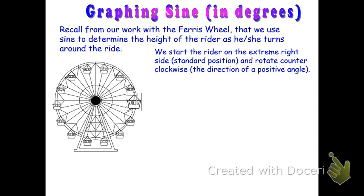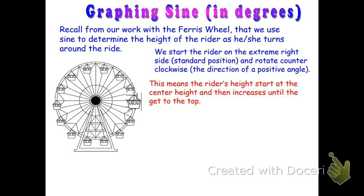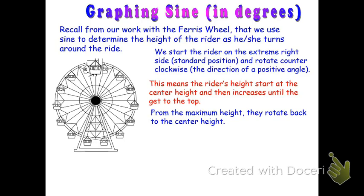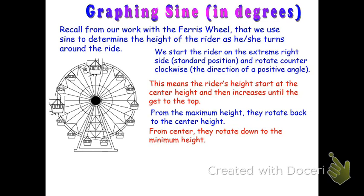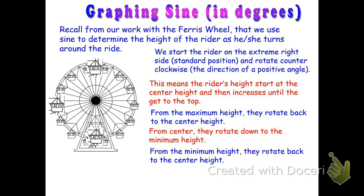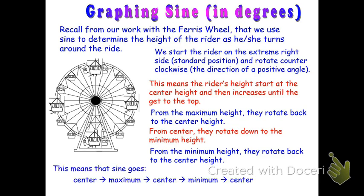If we start the rider on the extreme right-hand side, their height is the same as the center height of the Ferris wheel. They rotate until they get to the top, and at the top that's their maximum height. From maximum height, they keep rotating to the extreme left-hand side, where their height is back to center. From the extreme left-hand side, they rotate down to the bottom — that's their minimum height. From the minimum, they rotate back to center on the right-hand side, completing one revolution. Their sine has gone from center, to maximum, to center, to minimum, to center.